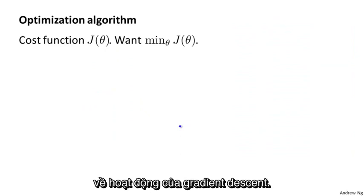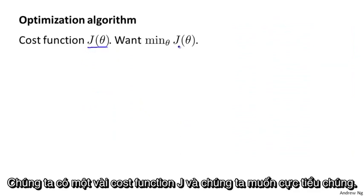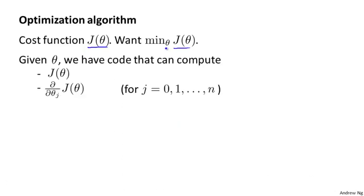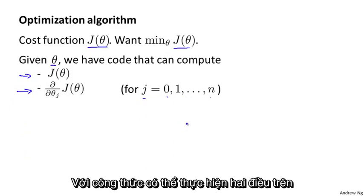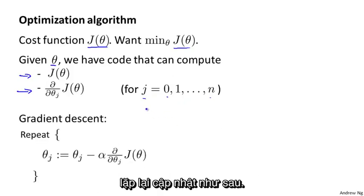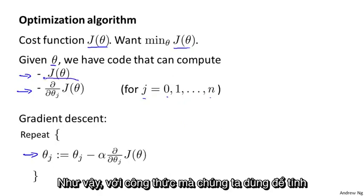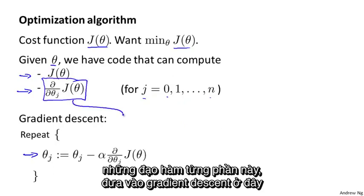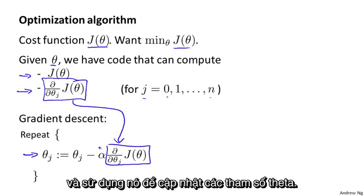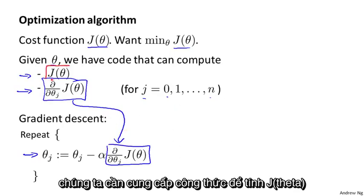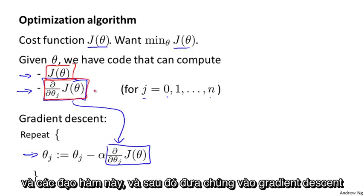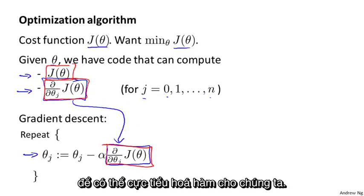Here's an alternative view of what gradient descent is doing. We have some cost function J and we want to minimize it. What we need to do is write code that can take as input the parameters theta and compute two things: J of theta, and these partial derivative terms for J, for j equals 0, 1, up to n. Given code that can do these two things, what gradient descent does is it repeatedly performs the following update. Given the code that we wrote to compute these partial derivatives, gradient descent plugs this in and uses that to update theta. So another way of thinking about gradient descent is that we need to supply code to compute J of theta and these derivatives, which then get plugged into gradient descent, which can then try to minimize the function for us.